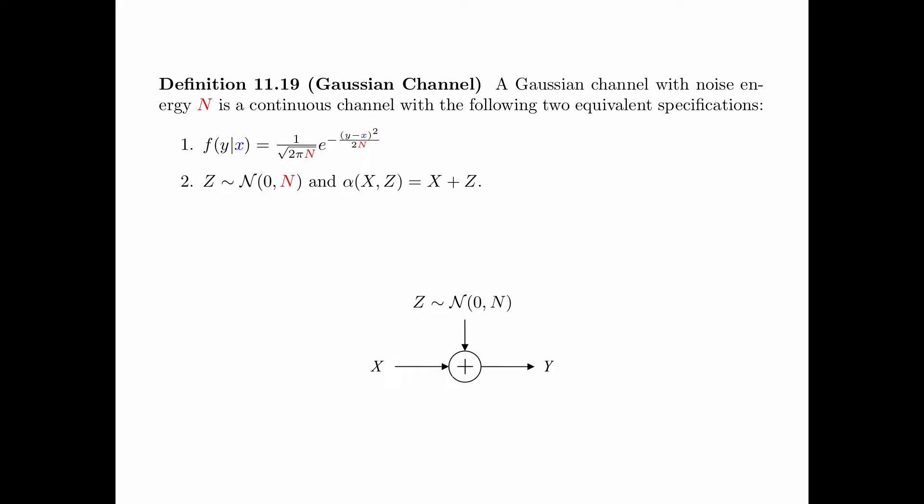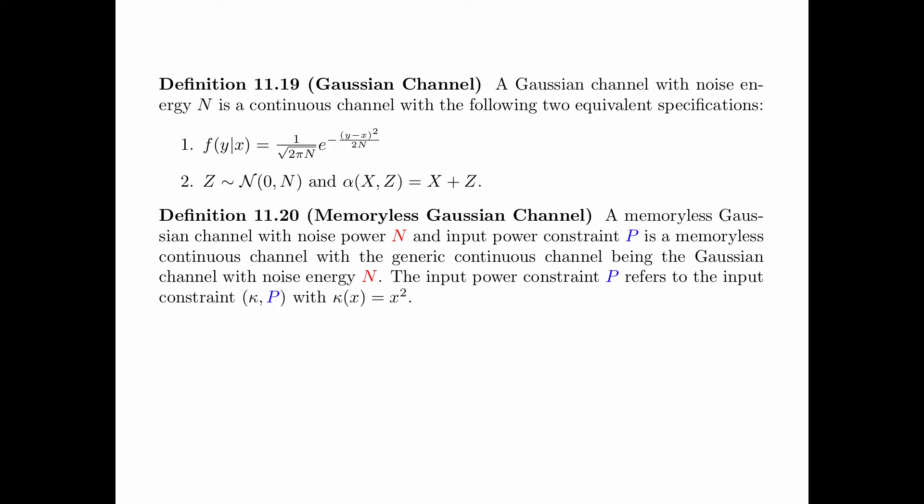This is illustrated in the following figure. Accordingly, we can define the memoryless Gaussian channel. A memoryless Gaussian channel with noise power n and input power constraint p is a memoryless continuous channel with the generic continuous channel being the Gaussian channel with noise energy n. The input power constraint p refers to the input constraint κ_p, with κ(x) = x². That is, the cost for transmitting a signal is proportional to the energy of the signal.